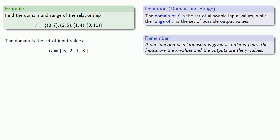Meanwhile, the range is the set of output values. Those are going to be the y values, and so our range is {7, 5, 4, 11}.